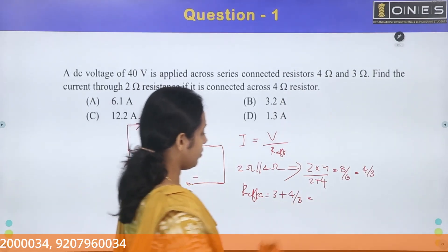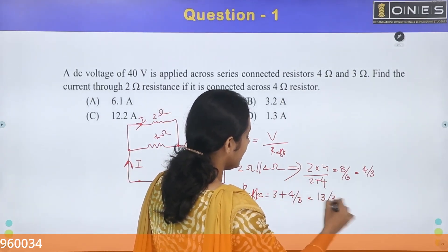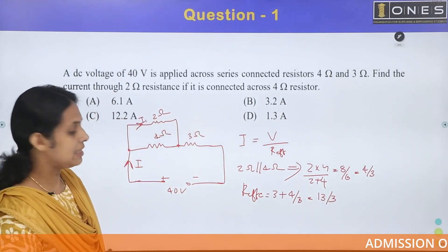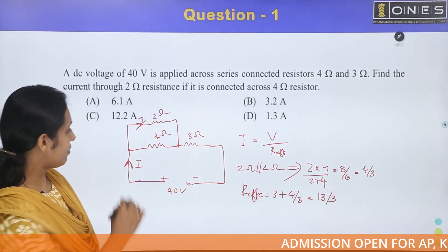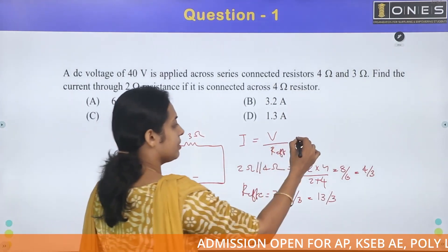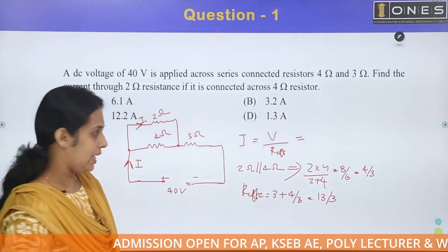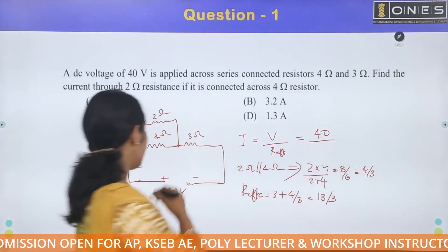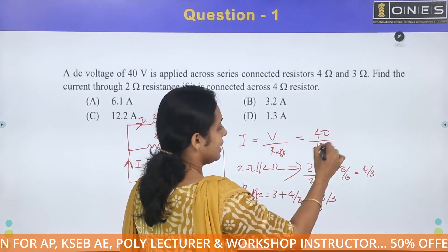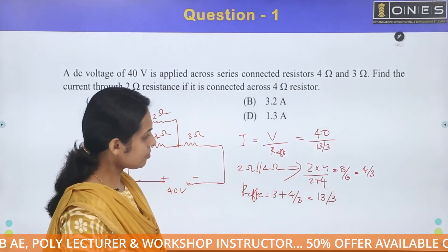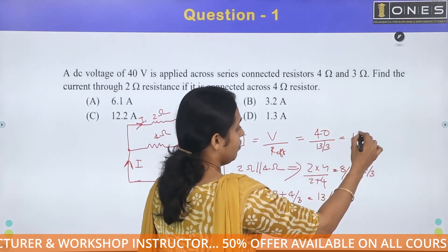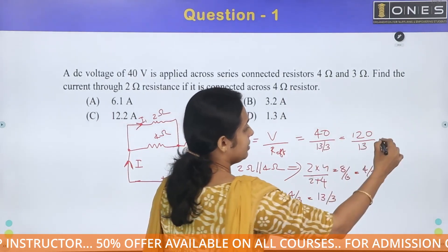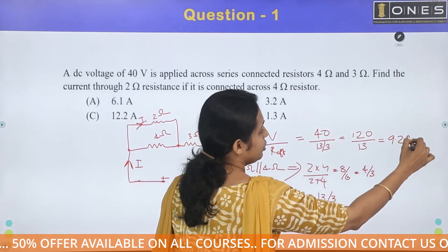So 3 plus 4/3 equals 9/3 plus 4/3, giving 13/3 ohm as the effective resistance. The net current I equals V divided by R_eff, which is 40 divided by 13/3, giving 120 divided by 13, approximately 9.2 amperes.